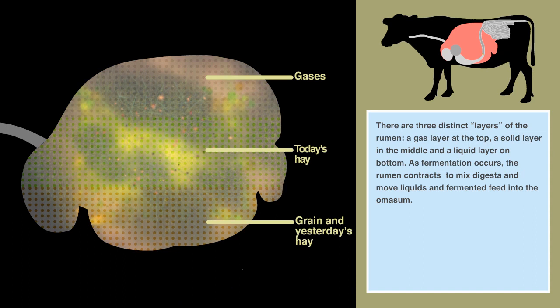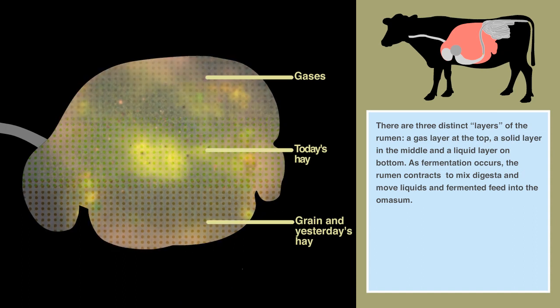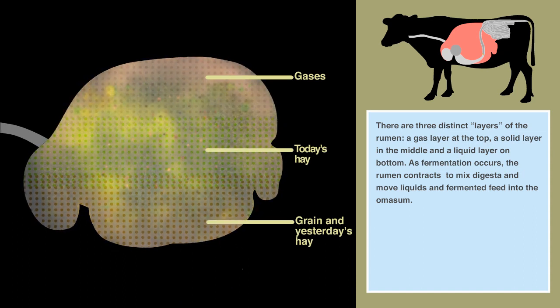There are three distinct layers of the rumen: a gas layer at the top, a solid layer in the middle, and a liquid layer on bottom.